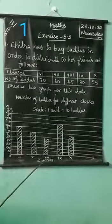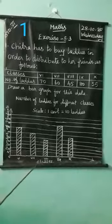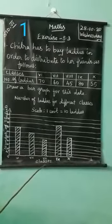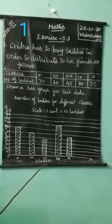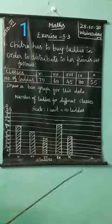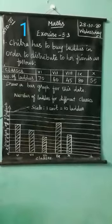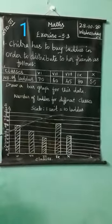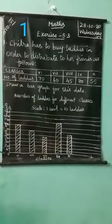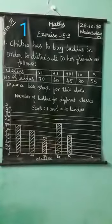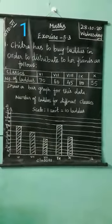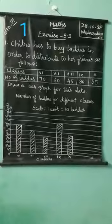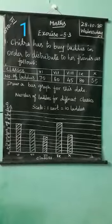How many classes? 6th, 7th, 8th, 9th and 10th — these classes are given on the x-axis. Scale: 1 unit is equal to 10 laddoos. We mark 0, 10, 20, 30, 40, 50, 60, 70, 80, 90 and 100 — that's 10 units on the y-axis.